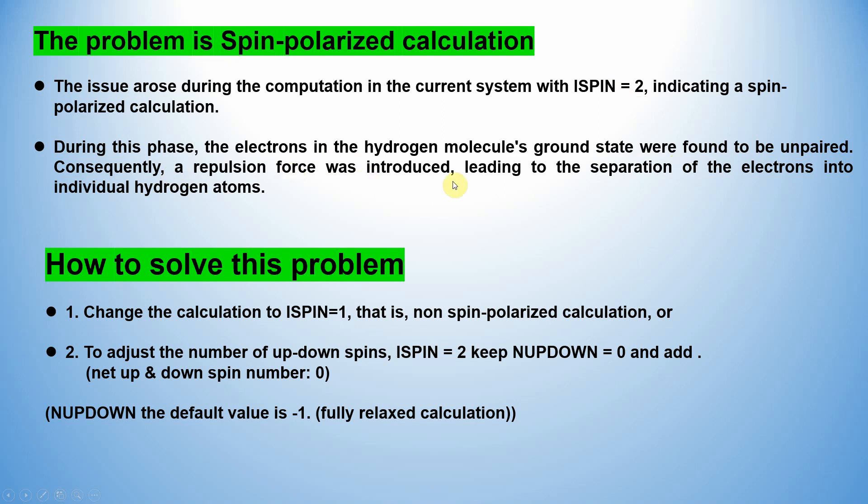Consequently, a repulsion force was introduced, leading to the separation of the electrons into individual hydrogen atoms. This is the cause of the problem while using ISPIN=2.